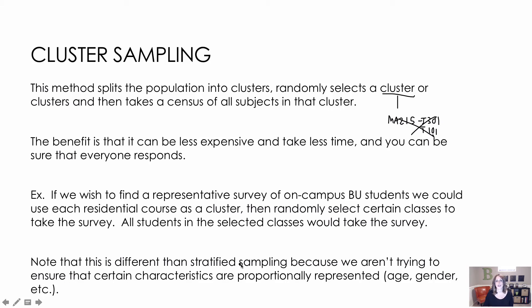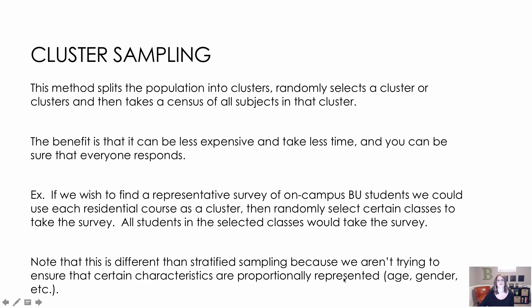Notice that cluster is different from stratified because we aren't trying to ensure that a certain characteristic is proportionally represented. Multi-stage sampling is where we combine several methods. For example, to determine attitudes about campus food service but concerned about differences between men and women — where each dorm floor is gender-based at 60% women and 40% men — I could choose two dorms (cluster), then six women's floors and four men's floors (stratified by the 60-40 split), and use a computer to select 10 students from each floor (SRS). Typically, though, we just stick with one method.